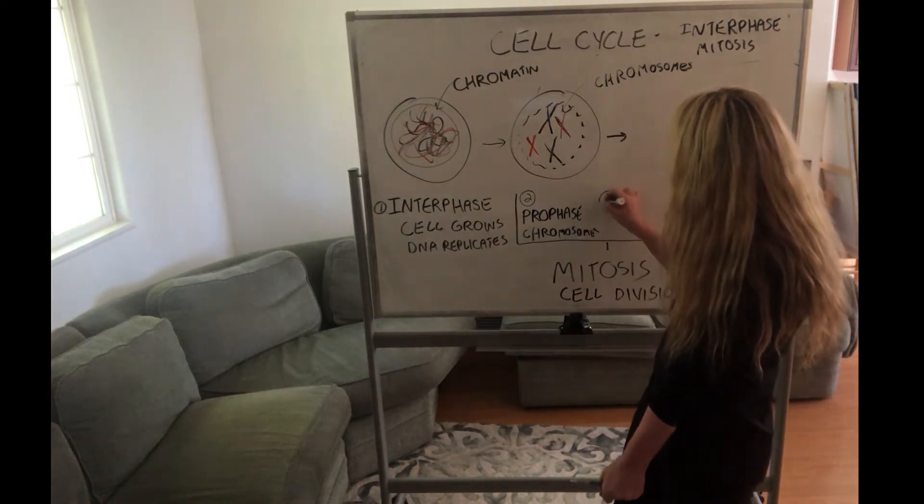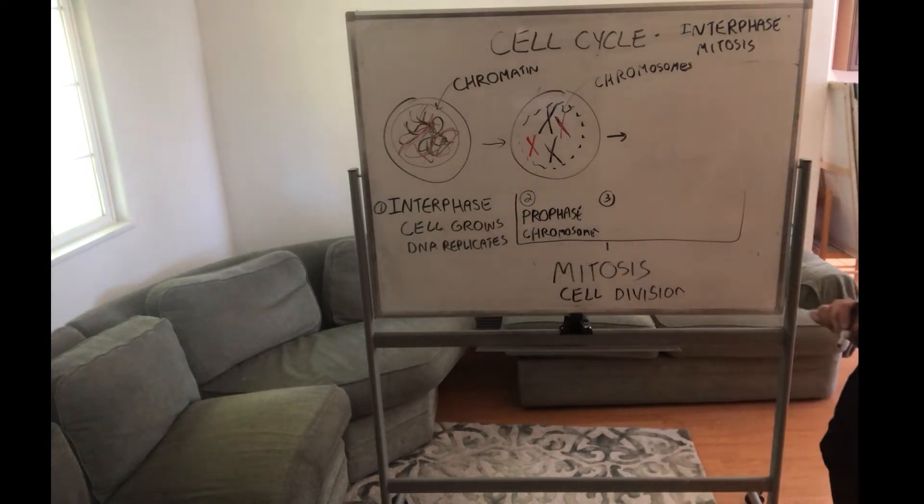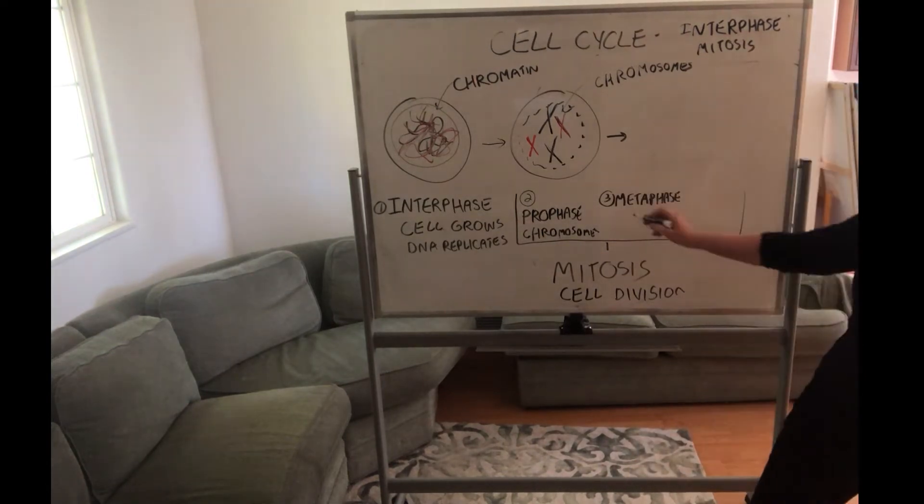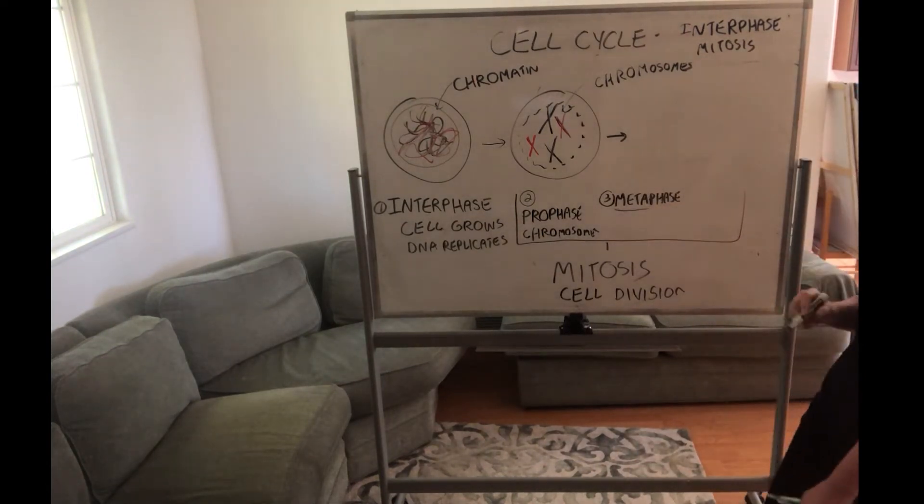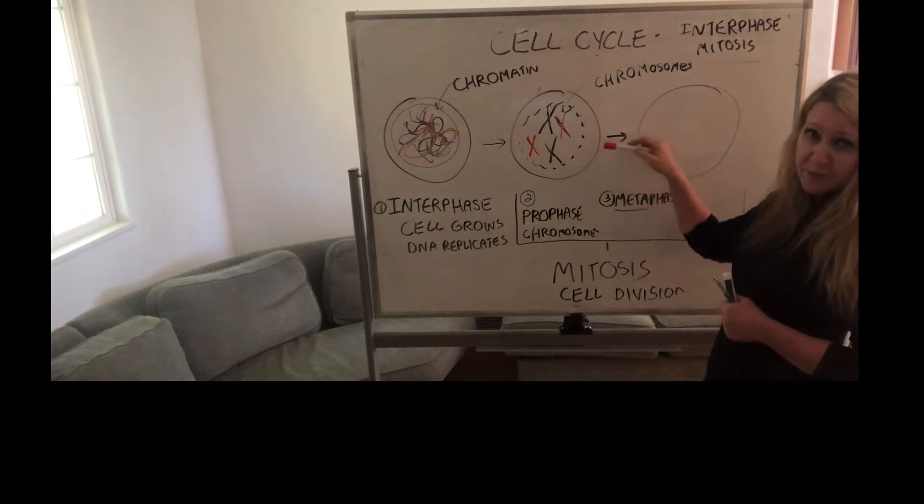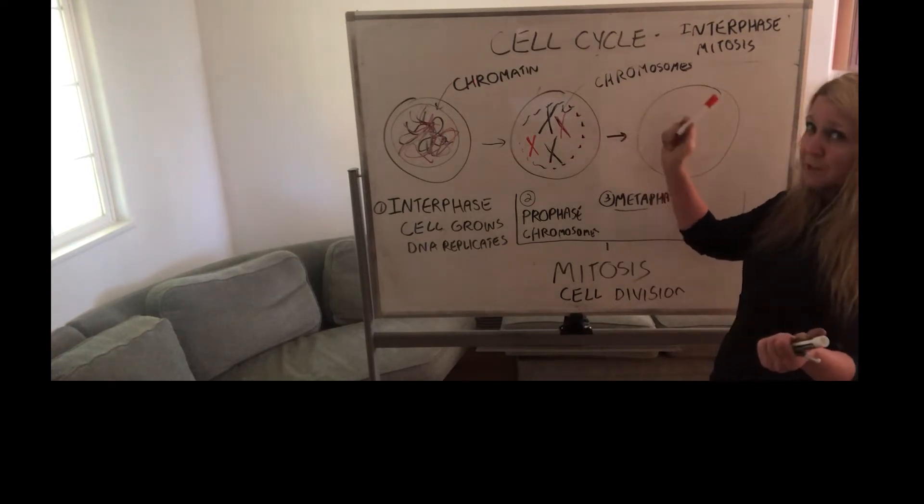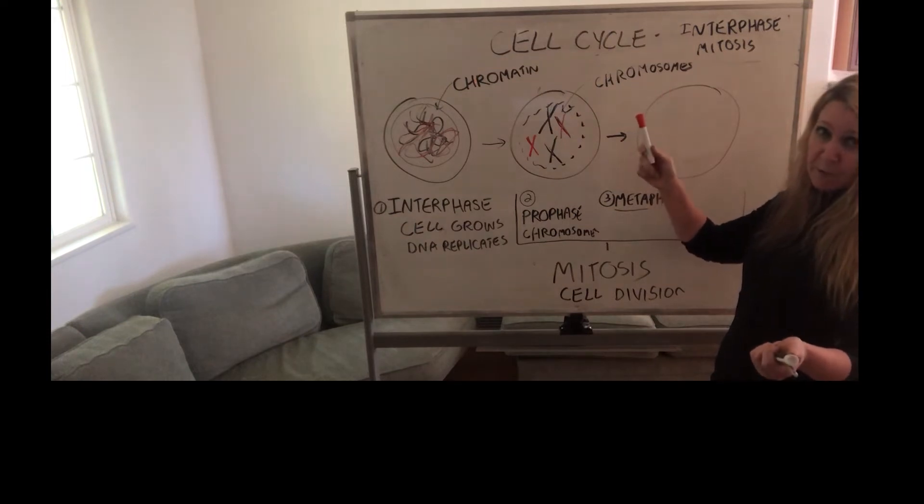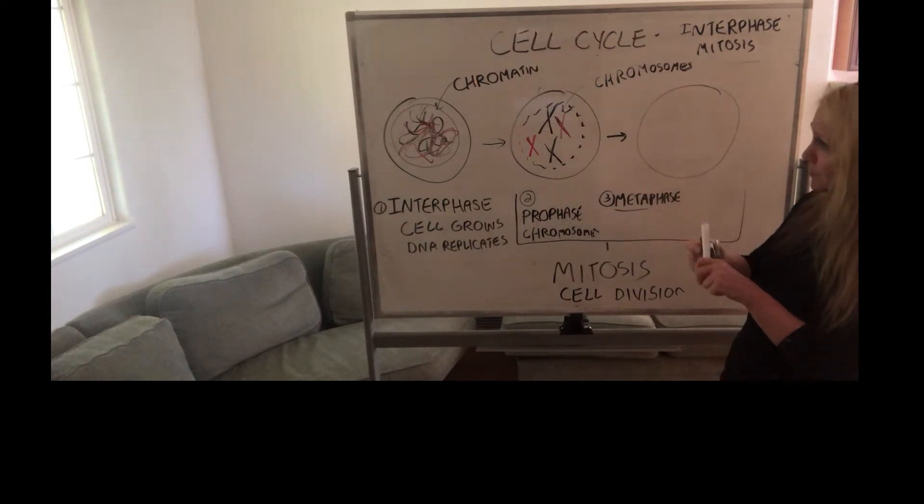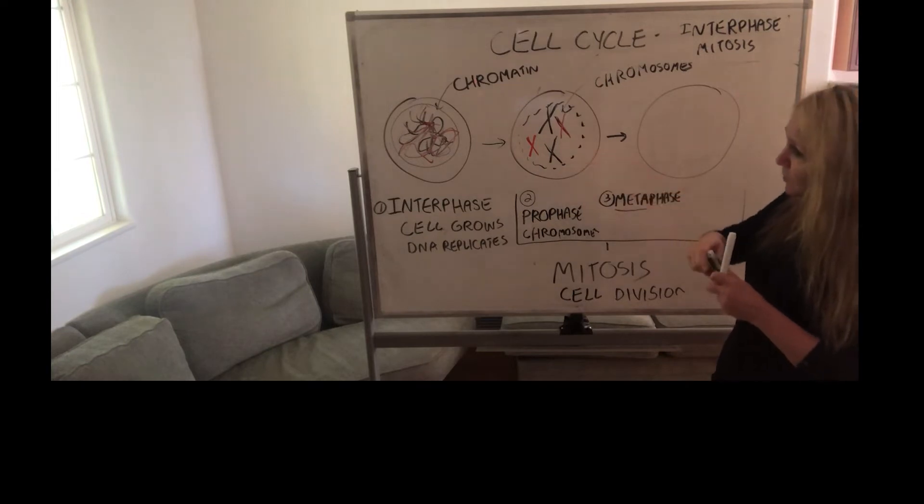The next phase of the cell cycle then is called metaphase—think middle, meta. Remember, this cell is going to divide into two. So we have to make sure the DNA gets in each of the two cells that are going to be made. Same DNA, because we're looking at mitosis. So these chromosomes...